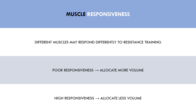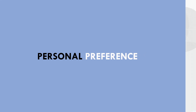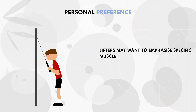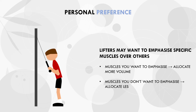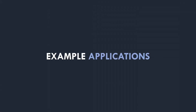The last factor which will influence volume allocation is personal preference. Different lifters may want to grow specific muscle groups more than others. If a trainee wants to emphasize a specific muscle group, they can train that muscle with more volume to see a faster rate of growth, and perform less volume for muscle groups they aren't as concerned with. Furthermore, trainees may not even want to train some muscle groups at all — this is completely up to the individual to determine. Volume should be allocated based on these three factors.